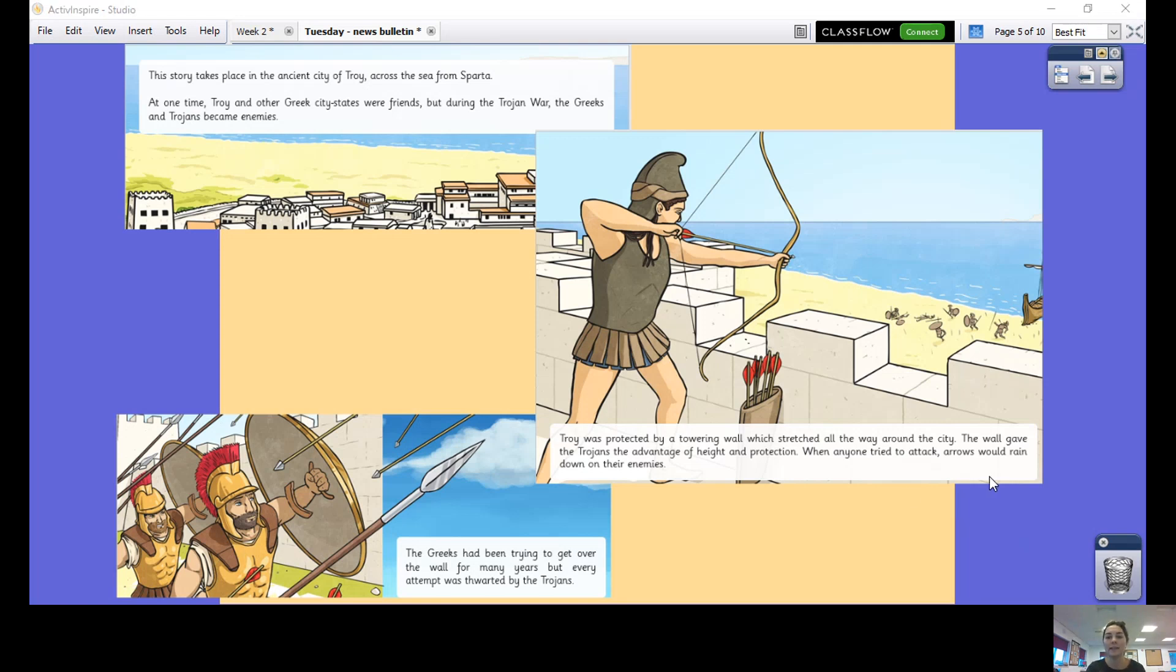The wall gave the Trojans the advantage of height and protection. When anyone tried to attack, arrows would rain down on their enemies. The Greeks had been trying to get over the wall for many years, but every attempt was thwarted by the Trojans. They've been trying and trying to invade but the defenses in Troy are just too good. They've got this big high wall, they've got all their archers at the top.